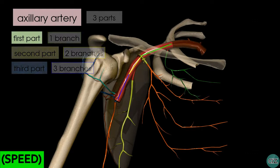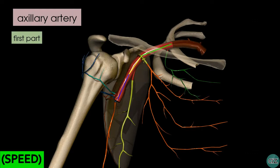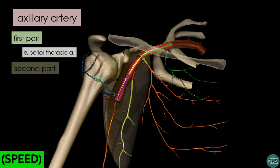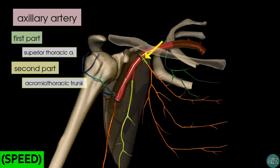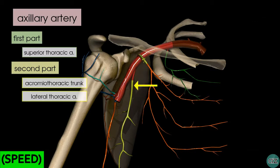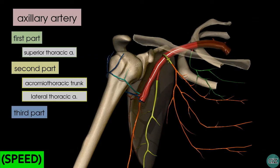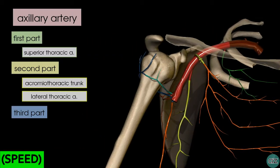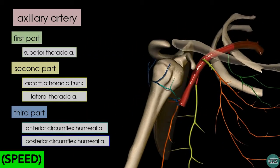The first branch, highlighted in green, arising from the first part of the axillary artery, is called the superior thoracic artery. The two branches from the second part of the axillary artery are highlighted in yellow. This one is the acromiothoracic trunk, also known as the thoracoacromial artery, and this one is the lateral thoracic artery. The third part gives off three arteries: the anterior and posterior circumflex arteries, and the subscapular artery.